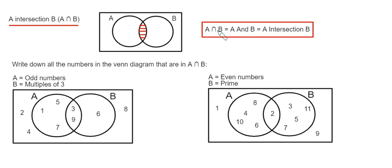Okay, so let's have a look at the two examples here. So we've got to write down all the numbers in the Venn diagram that are in A and B. So this is where the two sets overlap, so we're looking at the numbers in the middle here.